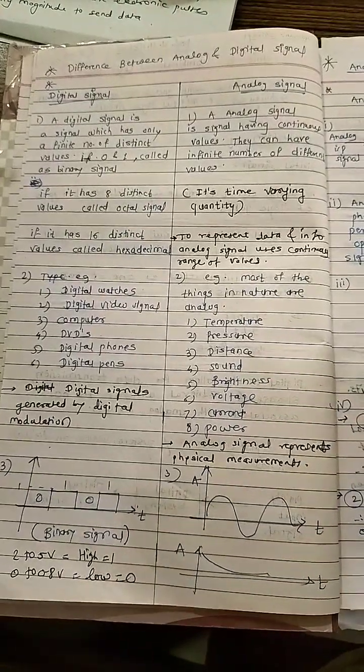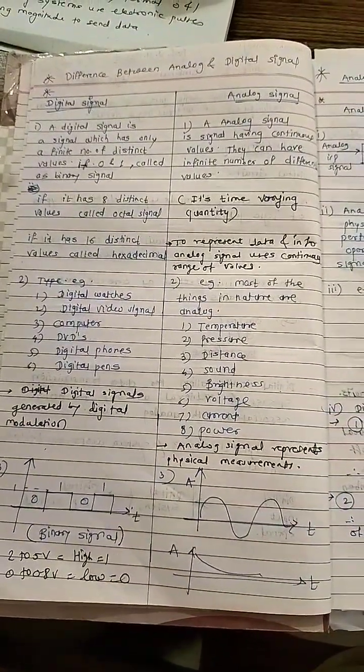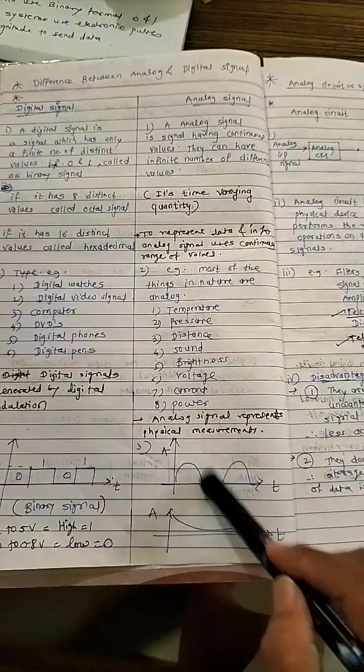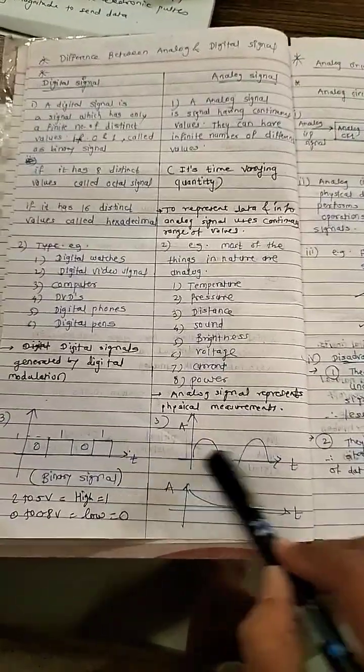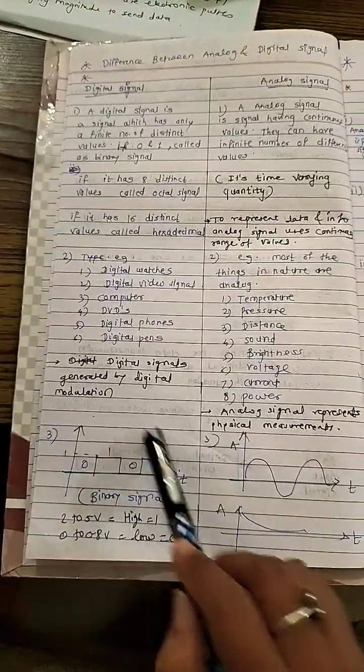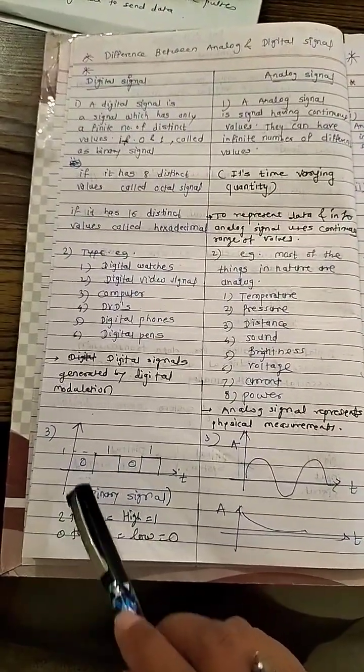The difference between analog signal and digital signal - you can see here analog signal is continuous in nature, it has an infinite number of different values and is time varying. Digital signal is represented here, you can see...